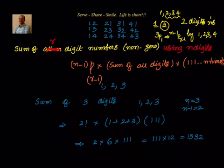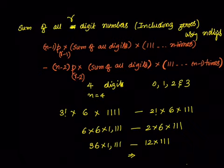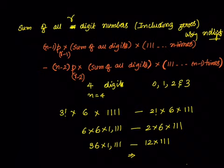This is the most general form for sum of all r digit numbers using n digits. Wherever we had (n-1) factorial, it becomes (n-1)P(r-1), and wherever we had (n-2) factorial, it becomes (n-2)P(r-2). Please go through this and see if it makes sense. If you are confused or it is not clear, do let me know. Thanks for your time and support. Bye for now.